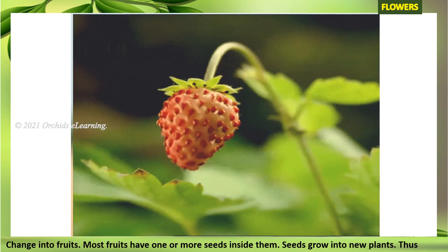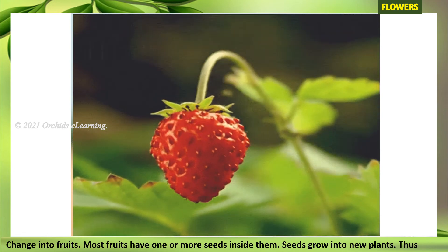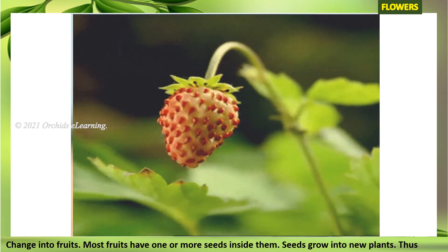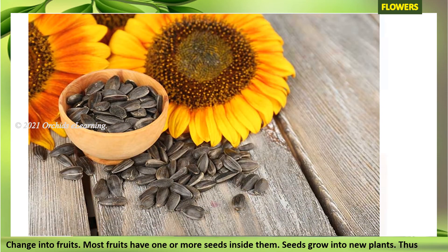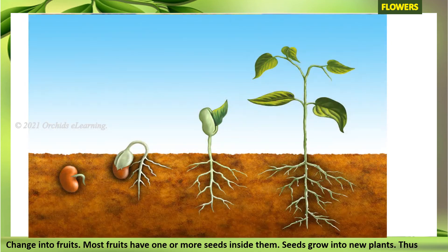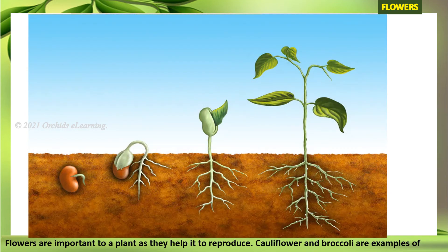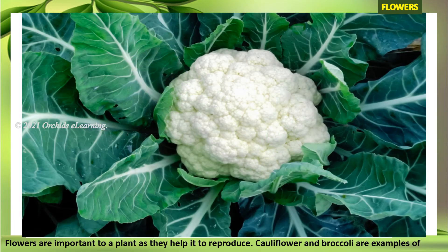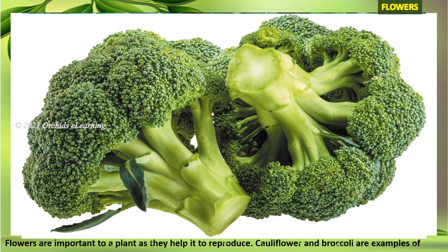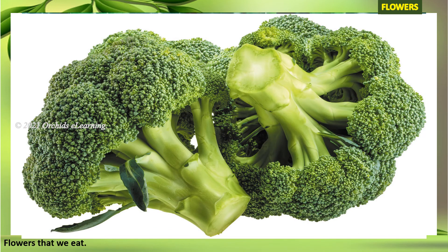Flowers: most flowers are brightly colored and have a sweet smell. Most flowers change into fruits. Most fruits have one or more seeds inside them; seeds grow into new plants. Thus, flowers are important to a plant as they help it to reproduce. Cauliflower and broccoli are examples of flowers that we eat.